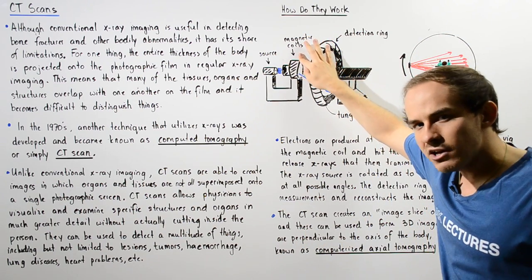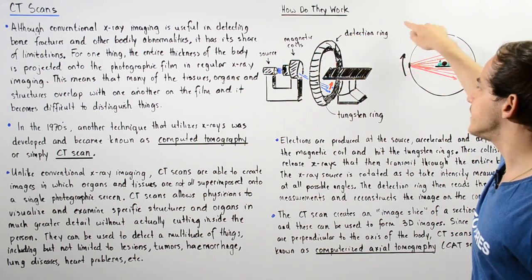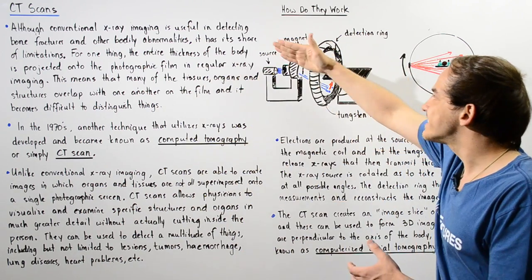The source creates electrons and accelerates those electrons through the magnetic coil. The magnetic coil acts to deflect our electrons and the electrons end up traveling and colliding with the region of our detection ring known as the tungsten ring. Inside the tungsten ring, the interactions between the electrons that are accelerating and colliding with that material and the atoms of that material basically release x-rays.